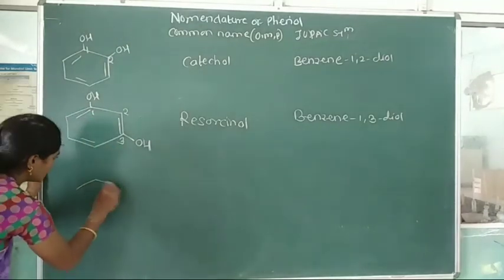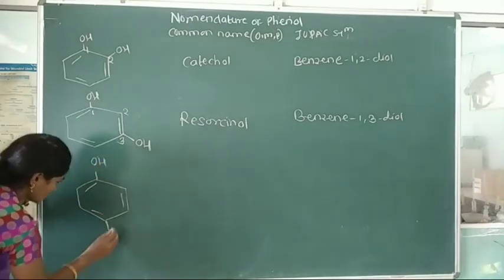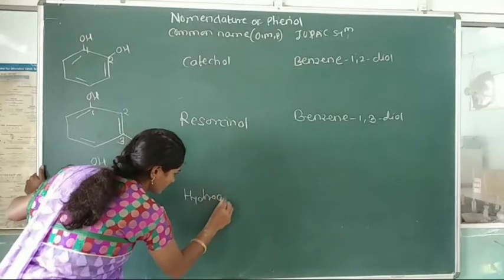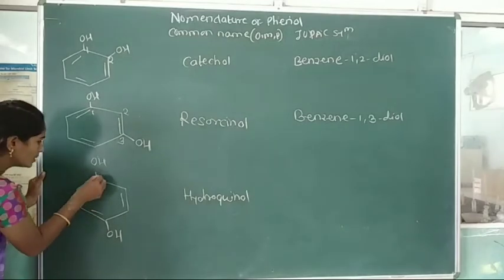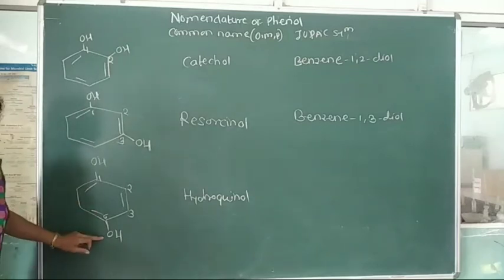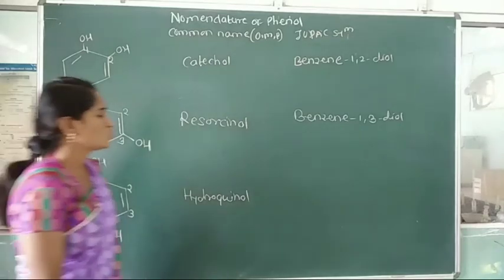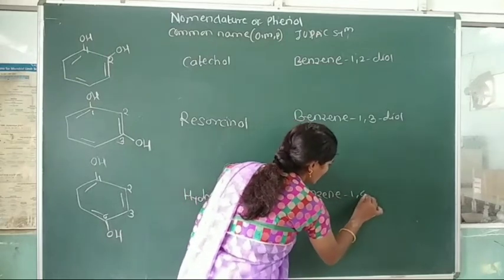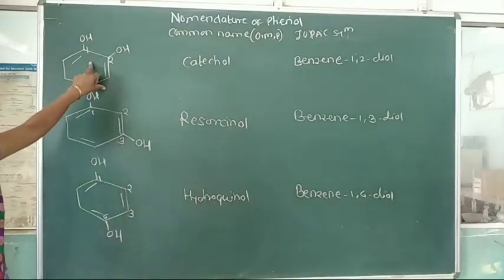Another example: suppose the two hydroxy groups are para to each other. The common name is hydroquinone. In the IUPAC system, numbering 1, 2, 3, 4 — the two hydroxy groups are para to each other, attached to carbon number 1 and carbon number 4, so the IUPAC name is benzene-1,4-diol.